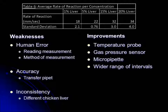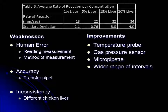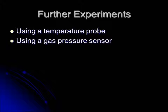Weaknesses in the experiment included human error in reading the volume of liquid in the graduated cylinder, as well as the method of recording the rate of reaction. This can be improved by using a temperature probe or a gas pressure sensor. Another weakness included inaccuracy due to the use of transfer pipettes, which can be improved by using a micropipette instead. Inconsistency also played a role — the lab should be performed on the same day to ensure use of the same chicken liver, and a wider range of intervals should be used to produce more significant results. Further experiments include using a temperature probe or gas pressure sensor to increase the accuracy of the results.